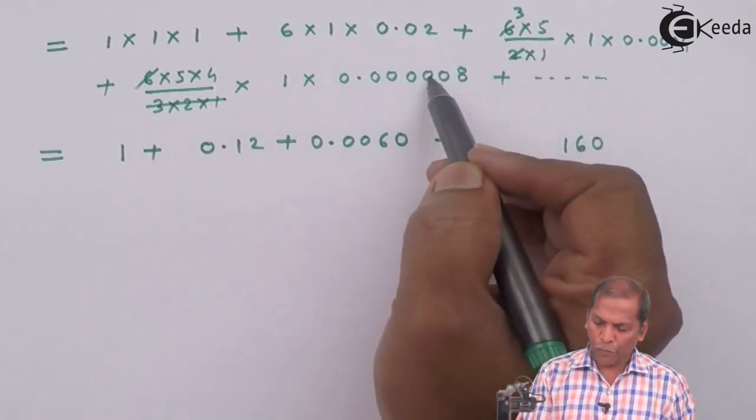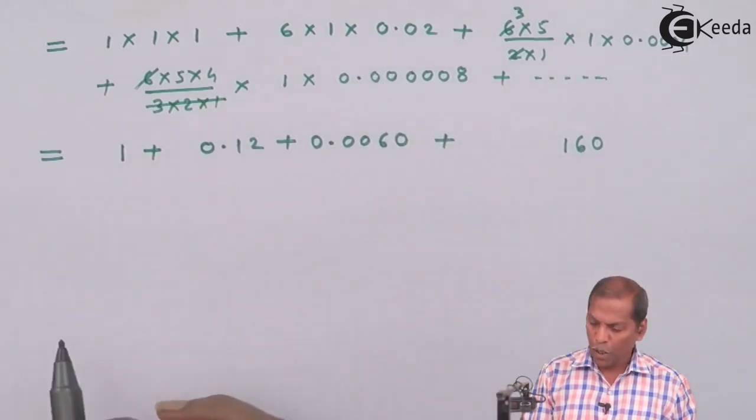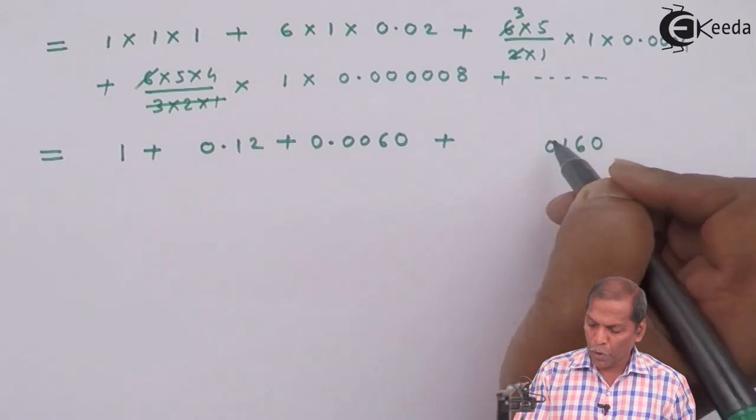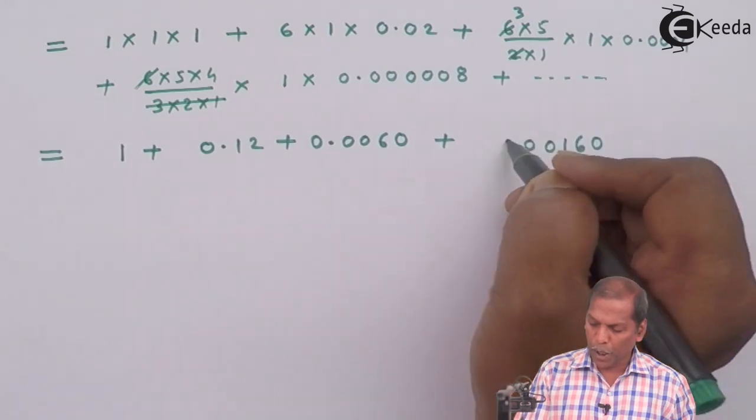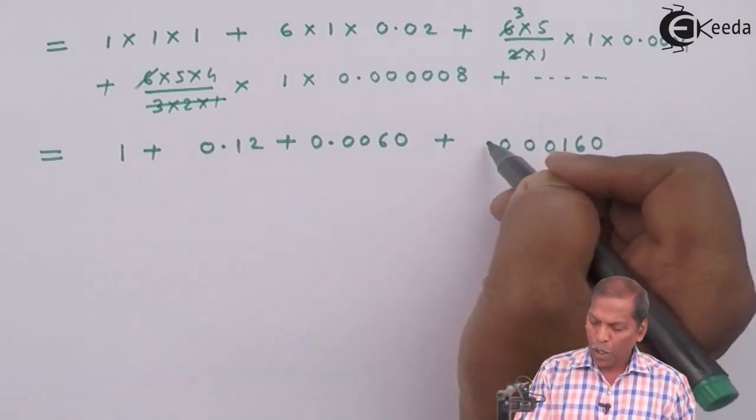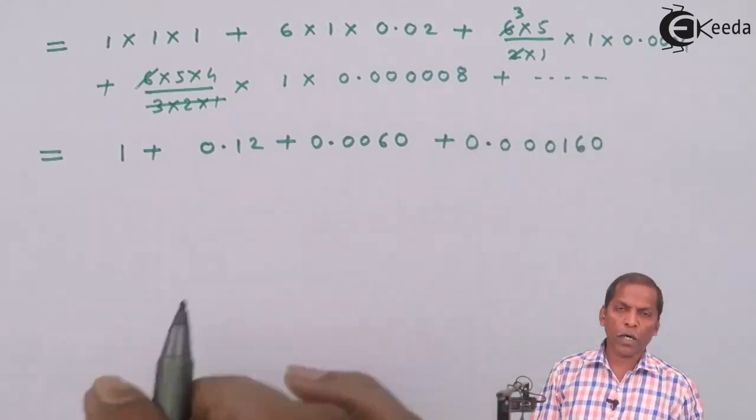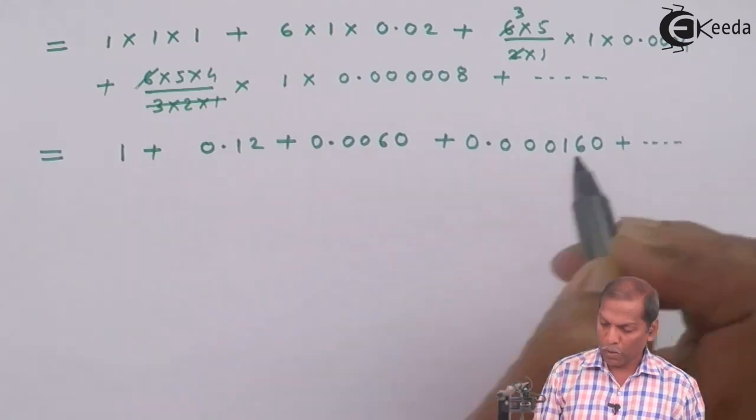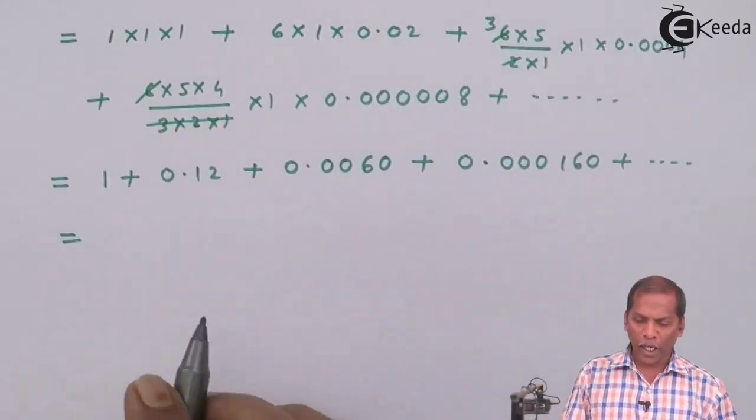But here we have to put decimal after 6 digits, so already 3 digits here remain, 4th digit 0, 5th digit 0, 6th digit also 0 and then decimal and then we write 0, plus going on.